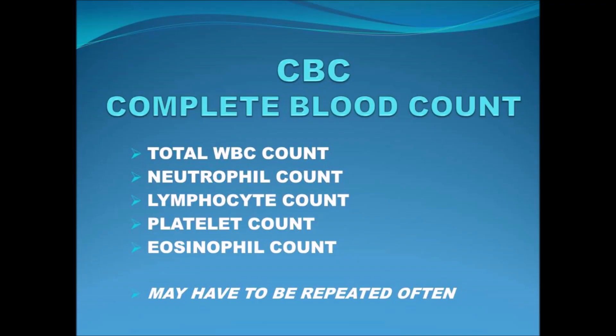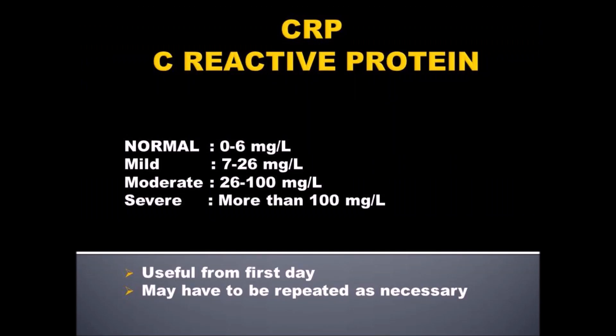The second thing is the high-resolution CT scan of the chest, simply called the HRCT. The third way is the COVID markers — these are various blood tests. The first among the prognostic markers is the CBP, or complete blood picture, also called the CBC, or complete blood count. By looking at the total WBC count, platelet count, lymphocyte count, neutrophil count, or their ratios, the doctor will arrive at a conclusion. This may need to be repeated every day or on alternate days.